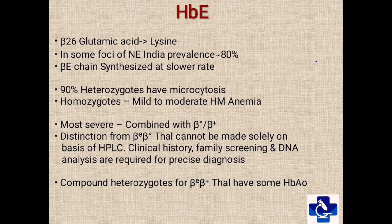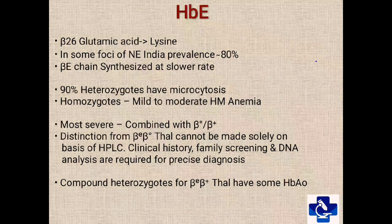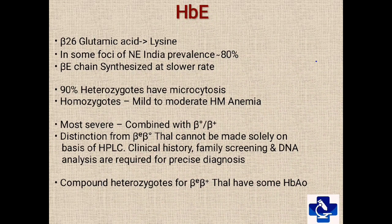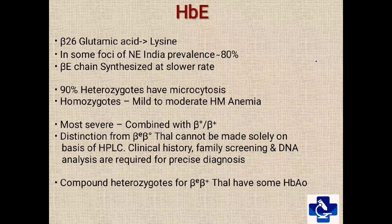Coming to hemoglobin E — in this variant, the 26th amino acid of the beta-globin chain, glutamic acid, is replaced with lysine. In some foci of northeast India, the prevalence of hemoglobin E is as high as 80%, and the beta-E chain is synthesized at a slower rate, hence it can be classified in thalassemic syndromes. 90% of heterozygous have microcytosis, while homozygous have hypochromic microcytic anemia which is mild to moderate.